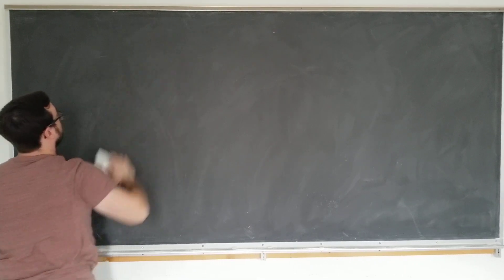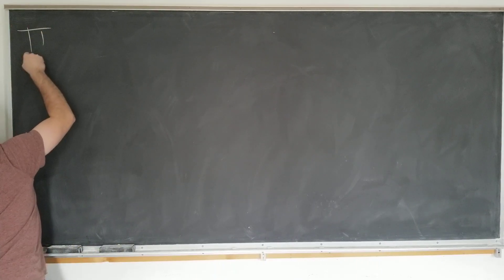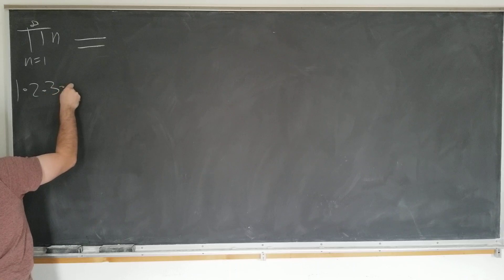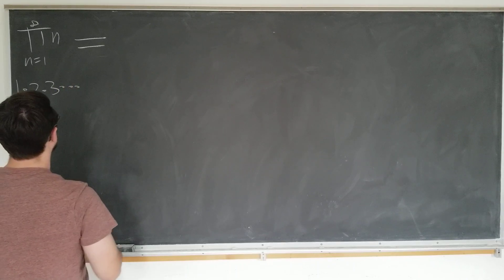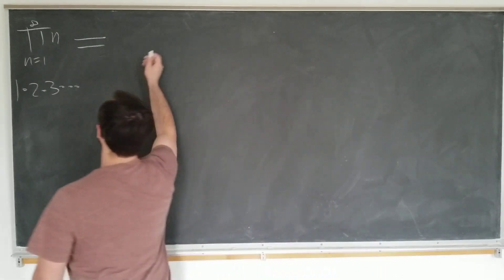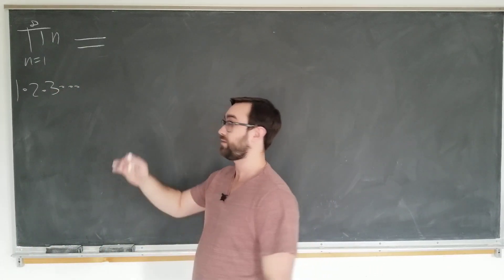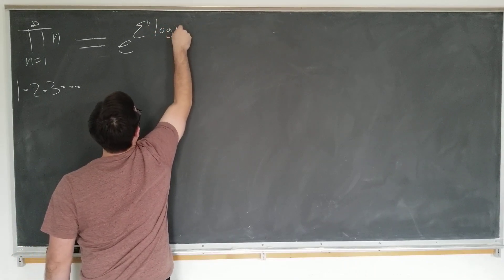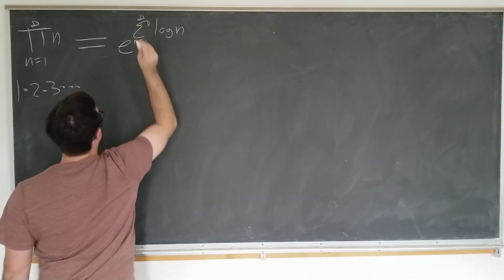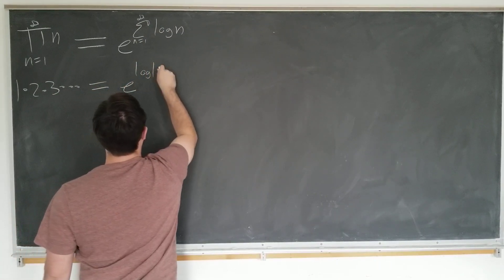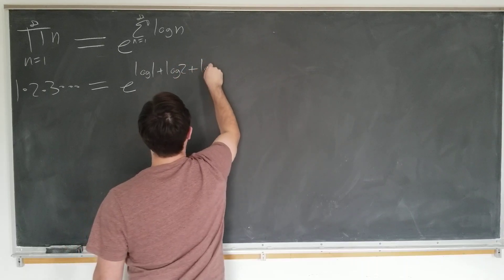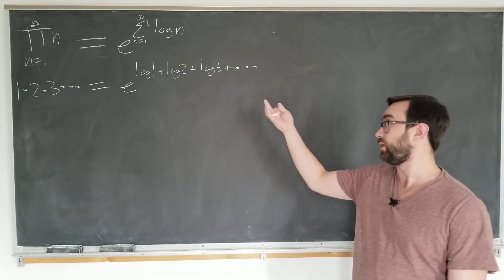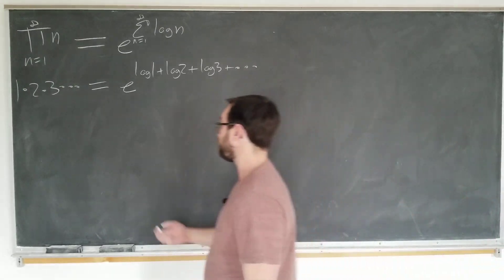We're going to regularize the following product: we multiply all of the integers together, written as 1 times 2 times 3, et cetera. Let's do exactly what we did before — take e to the log of this and turn it into a sum. E to the log of a product is e to the sum of the logs, so it's just e to the sum of log n where n goes from 1 to infinity. We're now stuck because this is not a zeta function anymore, but it's something closely related to it.